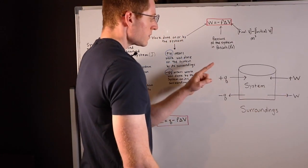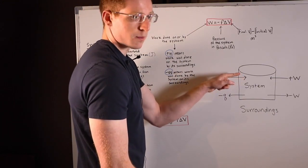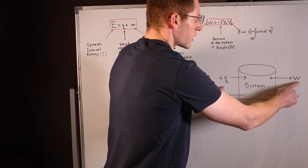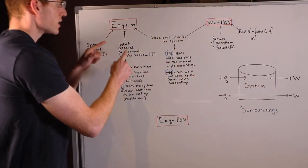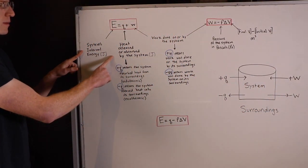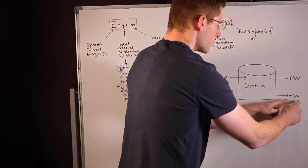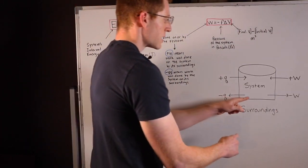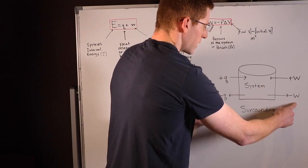So in other words, endothermic processes in which heat is added to the system from the surroundings and positive W's in which work is done on the system by the surroundings increase the system's internal energy. And we can say that oppositely, a negative Q and a negative W decrease the system's internal energy because they decrease the heat inside of the system and they do work on the surroundings.